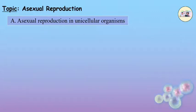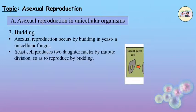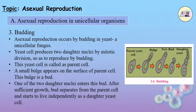3. Budding. Asexual reproduction occurs by budding in yeast, a unicellular fungus. The yeast cell produces two daughter nuclei by mitotic division to reproduce by budding; this yeast cell is called the parent cell. A small bulge called a bud appears on the surface of the parent cell. One of the two daughter nuclei enters this bud. After sufficient growth, the bud separates from the parent cell and starts to live independently as a daughter yeast cell.